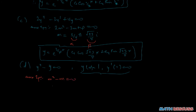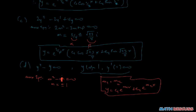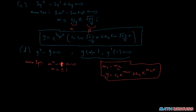When we solve the auxiliary equation m squared minus 1 equals zero, we get m equals plus or minus 1, which are distinct real values. Recall that when you have distinct values m1 and m2, the general solution is y equals c1·e to the power m1·x plus c2·e to the power m2·x. So the general solution is y equals c1·e to the power x plus c2·e to the power negative x.